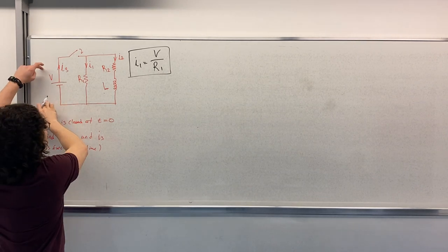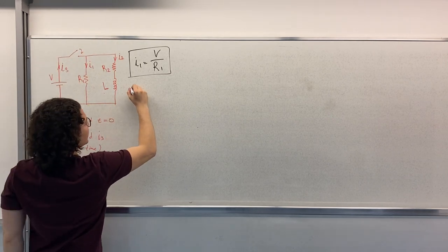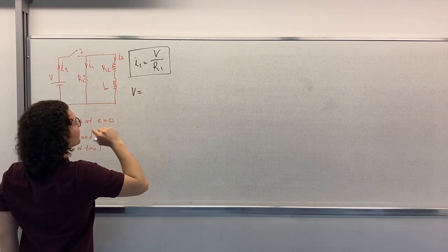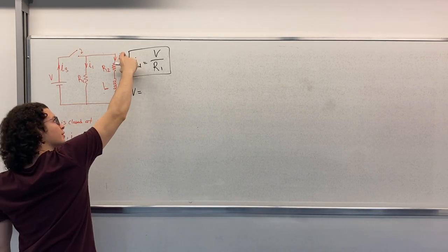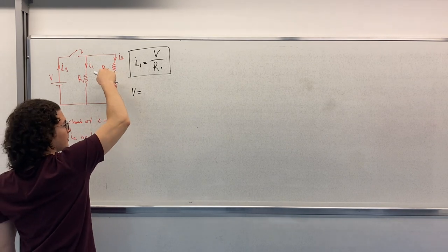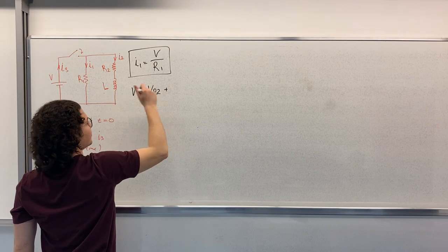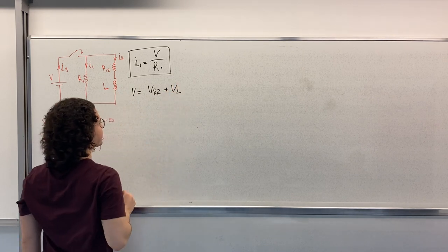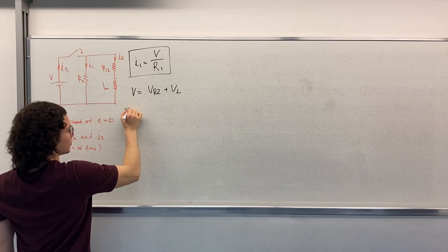So for R2, we will again use this voltage here. V is equal to the voltage drop here plus the voltage drop here. Let's write them as V R2 plus V L.